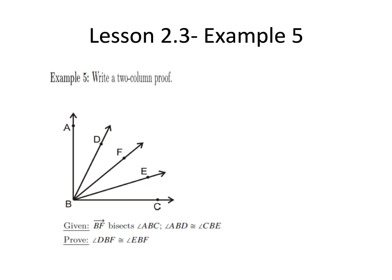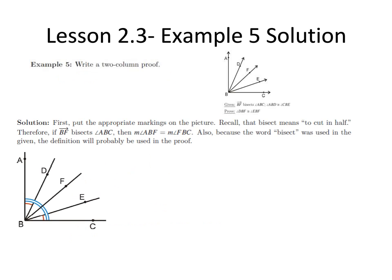Given: Ray BF bisects angle ABC and angle ABD is equal to angle CBE. Prove: Angle DBF equals angle EBF.